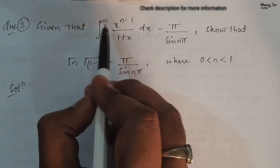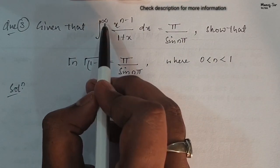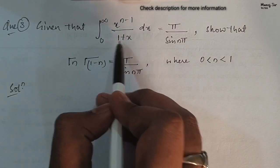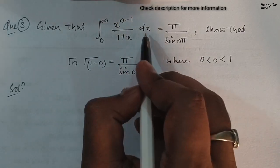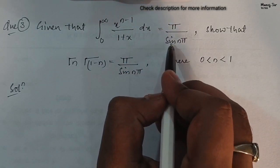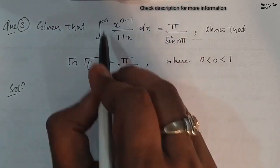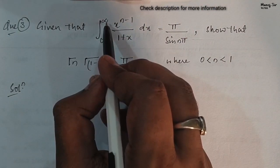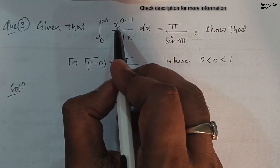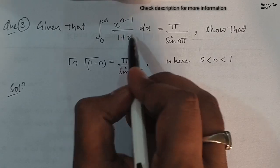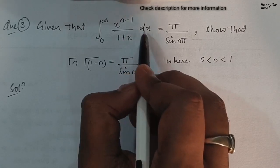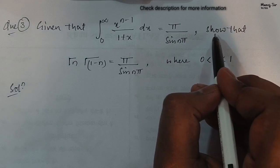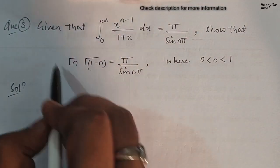Given that the integration with limit from 0 to infinity of x to the power n minus 1 upon 1 plus x dx is equals to pi upon sin(nπ). This part is given in the problem. We need to show this.